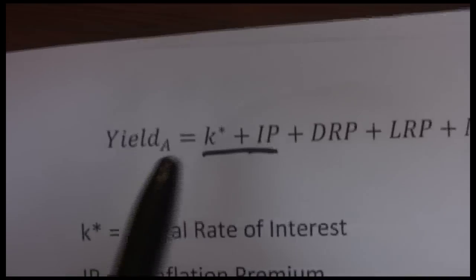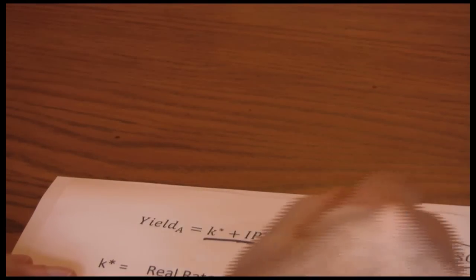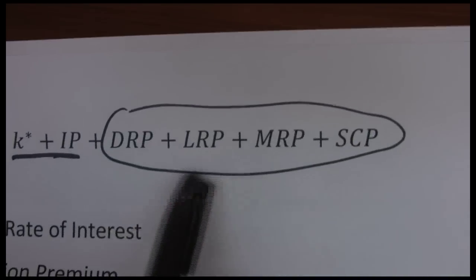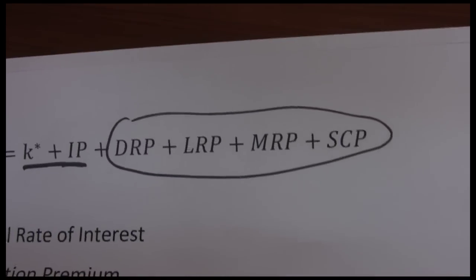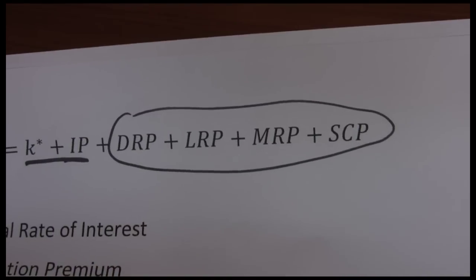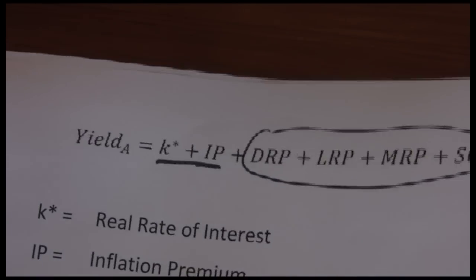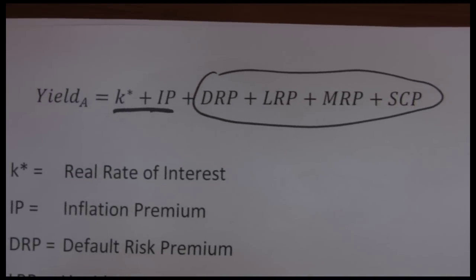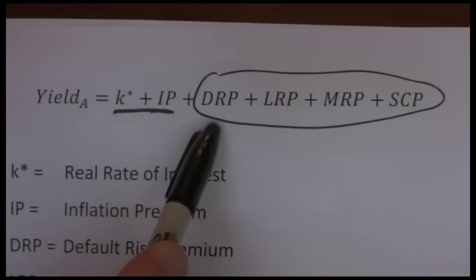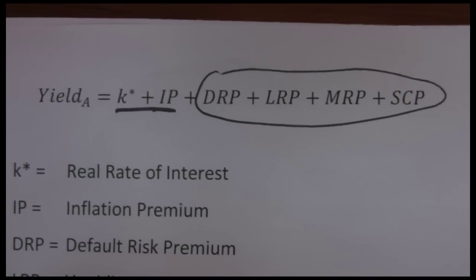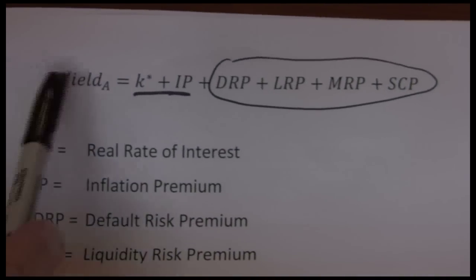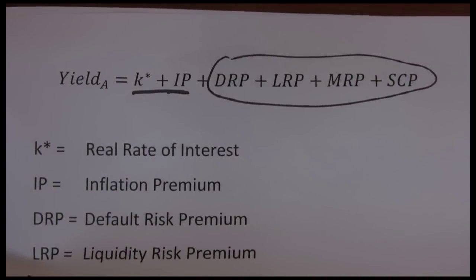So we have our risk-free rate, and then we have these other factors that measure risk premiums. Each bond's yield is a function of the risk-free rate plus the risk premiums associated with that bond. The higher the risk premiums, the higher the interest rate. One of the most difficult challenges for a bond investor is figuring out how high these various risk premiums should be for each particular bond. The better the investor does at determining a fair yield — the appropriate interest rate — the better they'll be at making investment decisions.